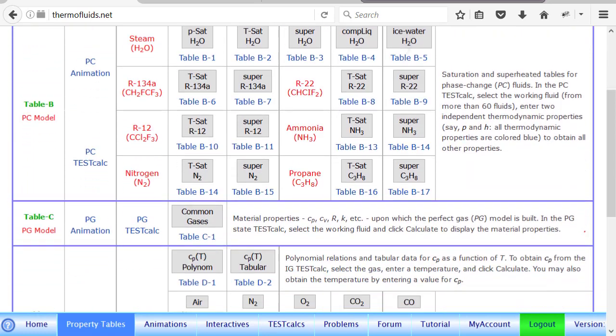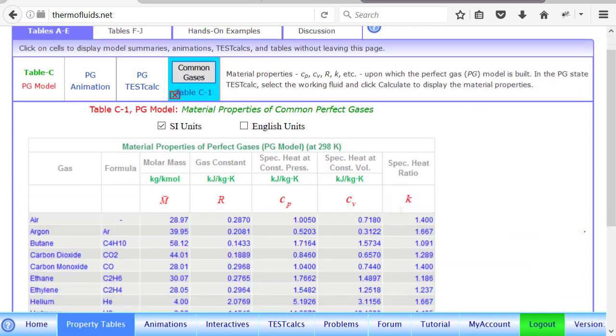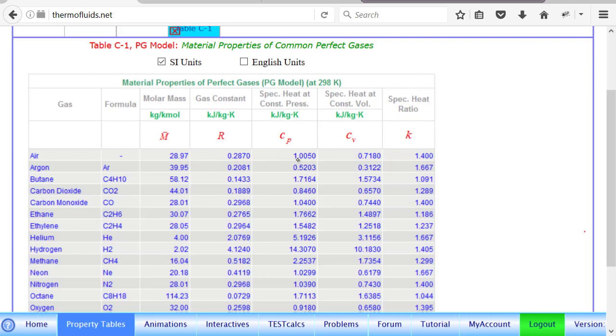So we go to the property tables, and for the PG model, for common gases, for air, cp is almost 1.005 and cv is 0.718.